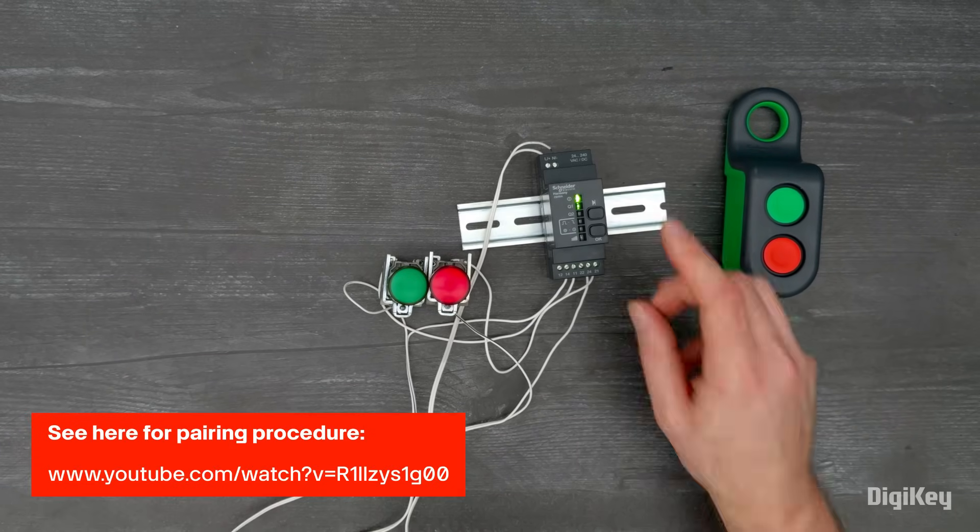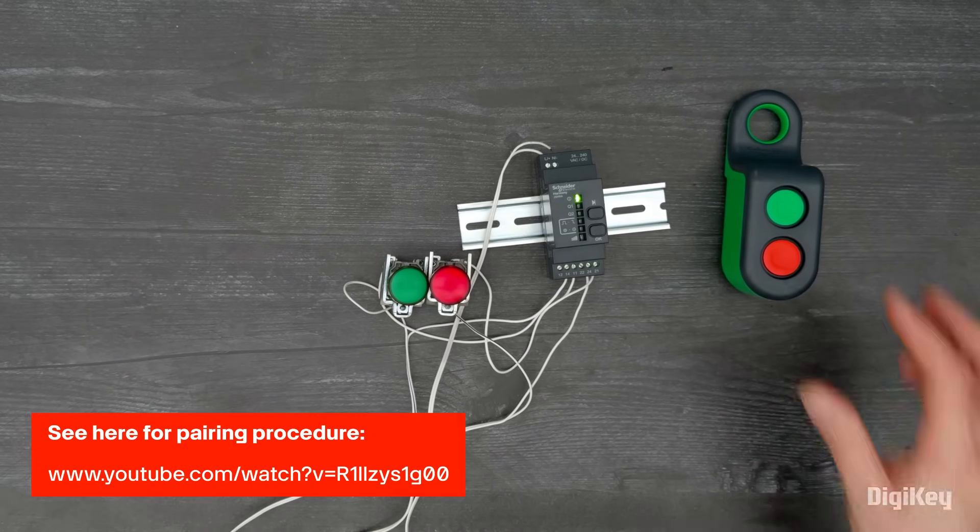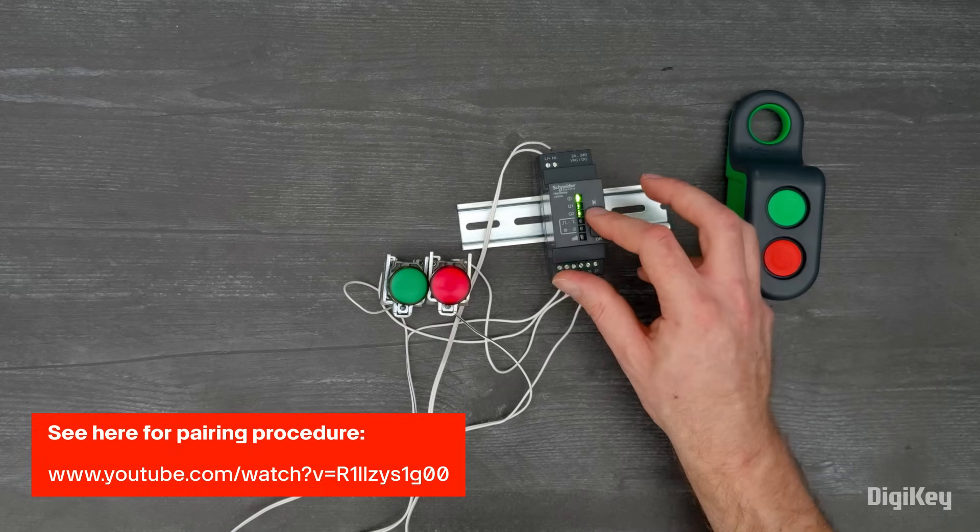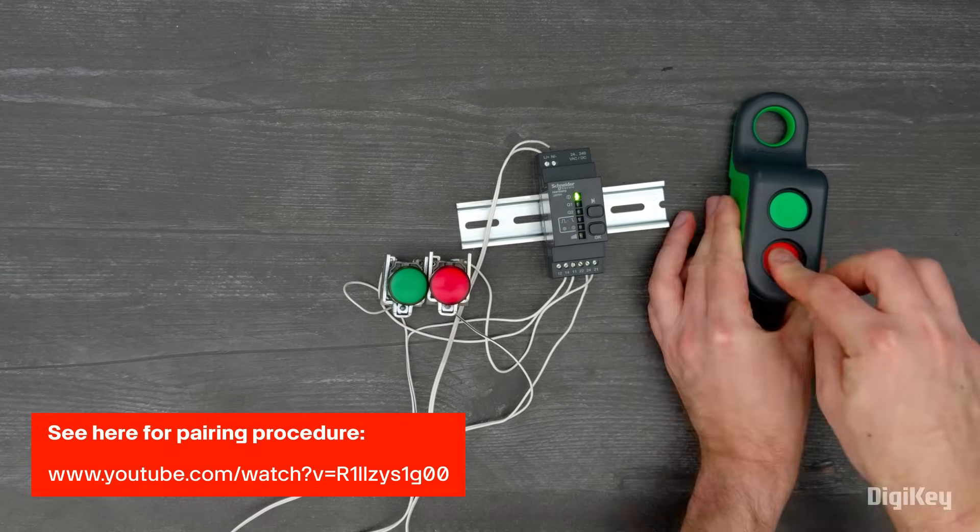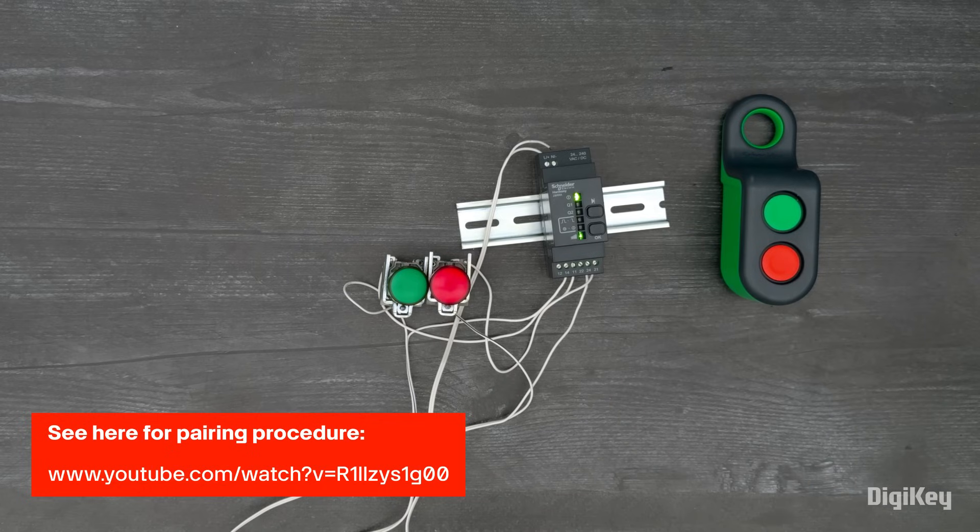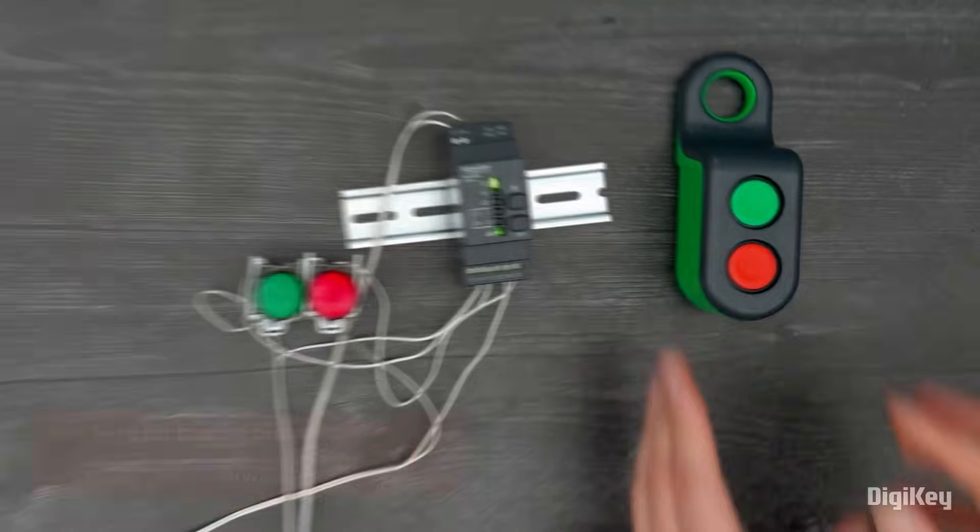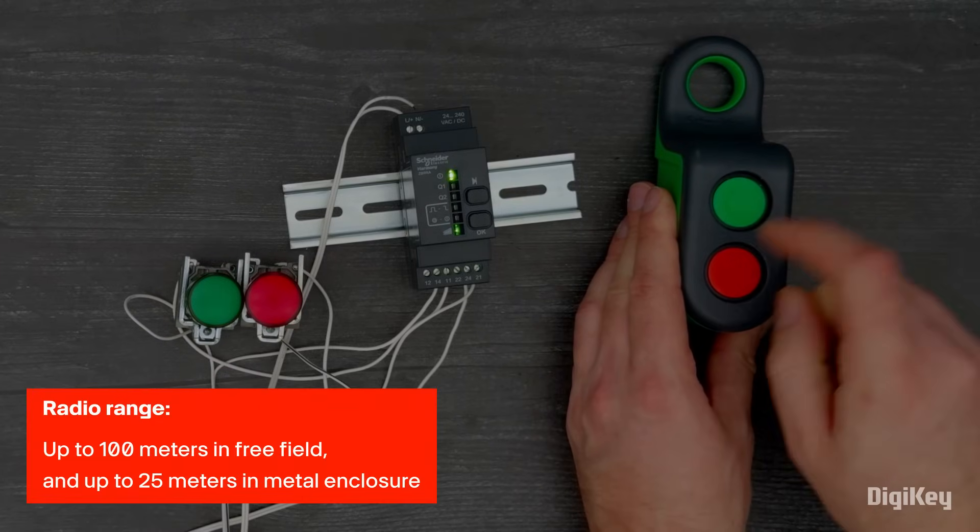Each push-button has to be individually paired to the respective relay output of the receiver, and up to 32 transmitters may be paired to the receiver. Once paired, we can press each push-button to confirm actuation.